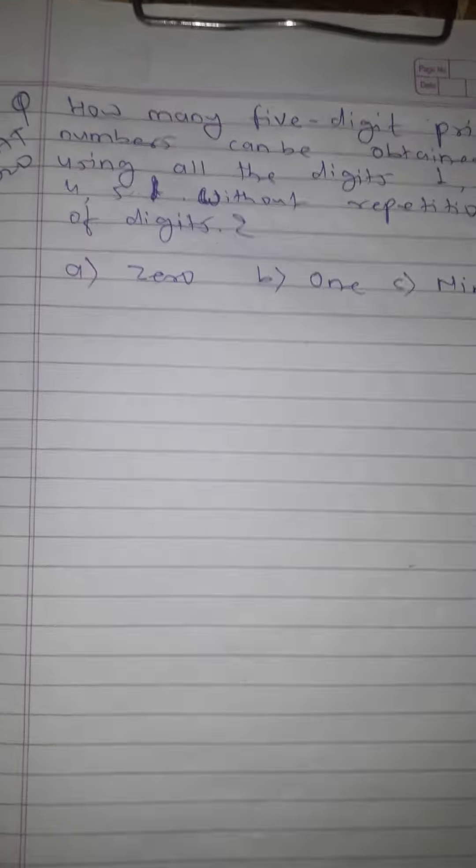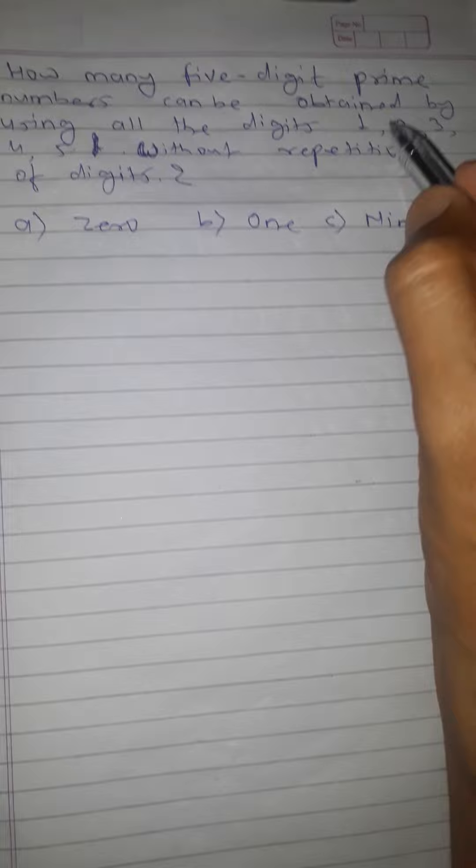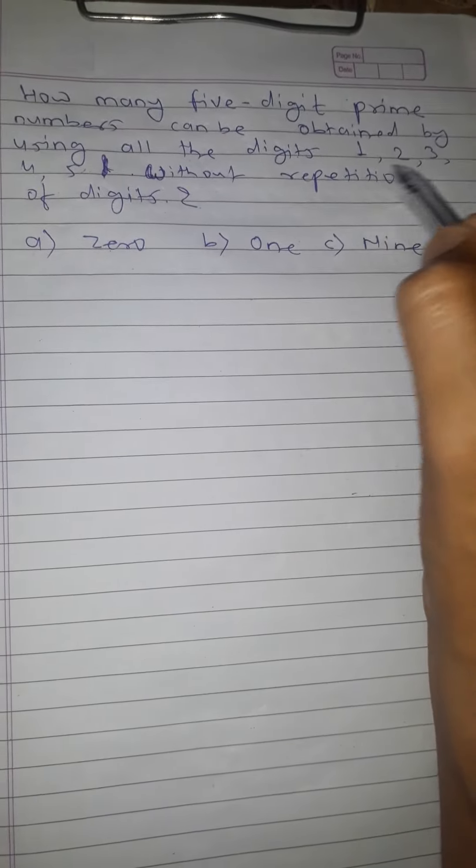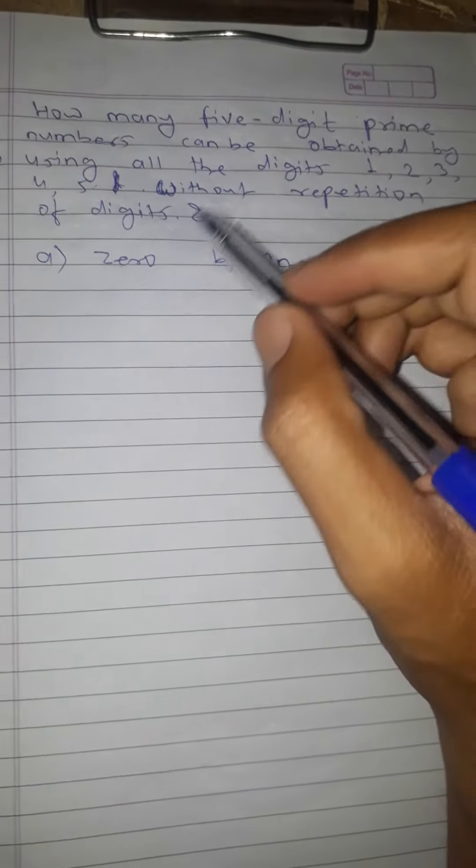Hello friends, today we are going to discuss a new topic. This question came in UFC Prelims 2020. The question is: How many five-digit prime numbers can be obtained by using all the digits 1, 2, 3, 4, and 5 without repetition of digits?